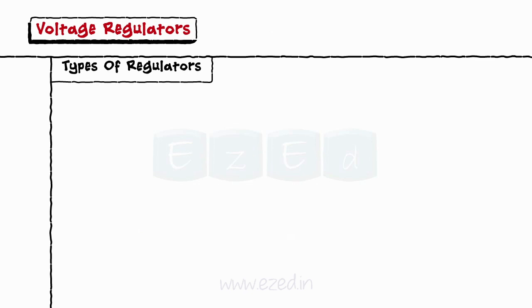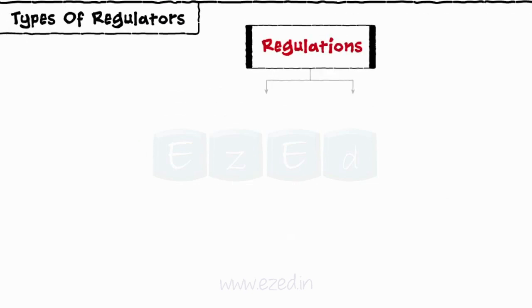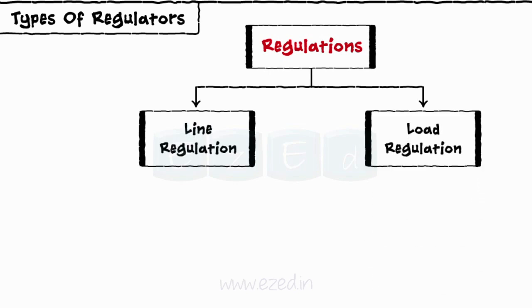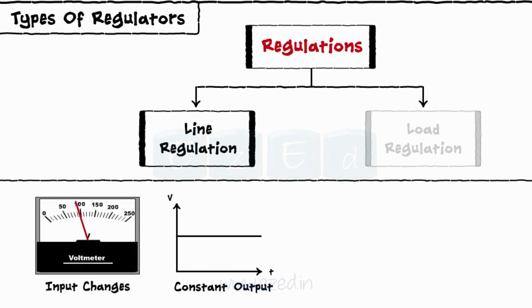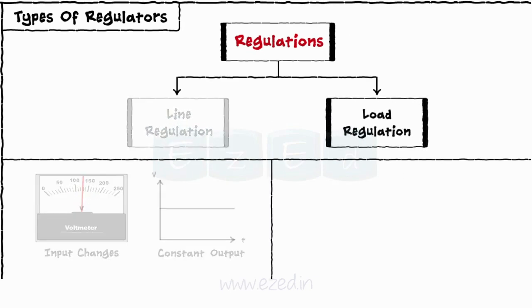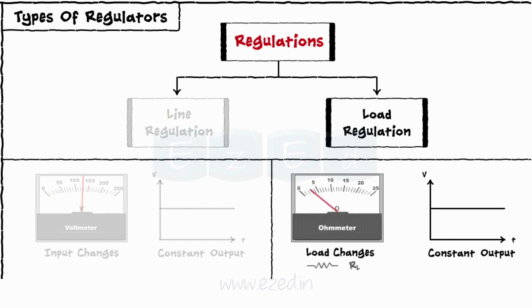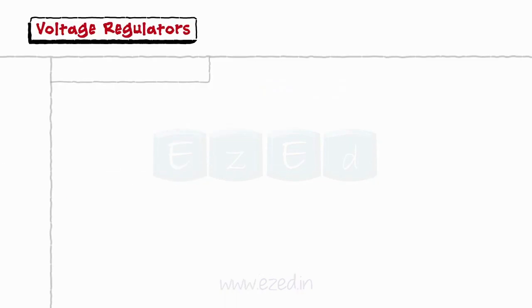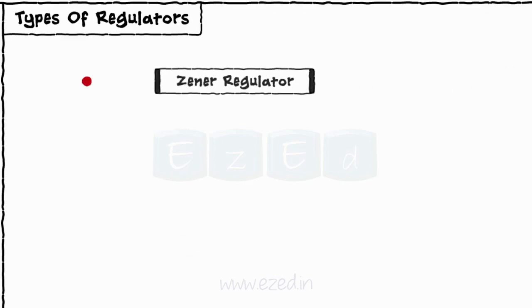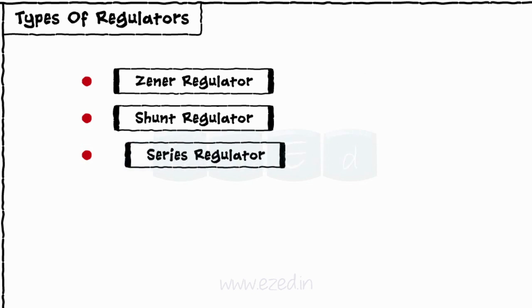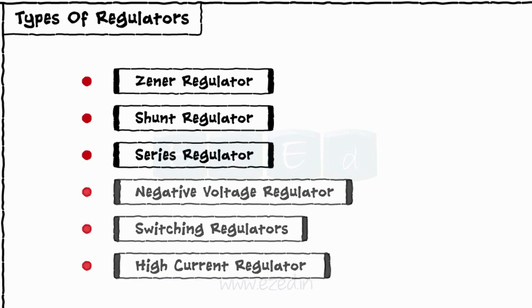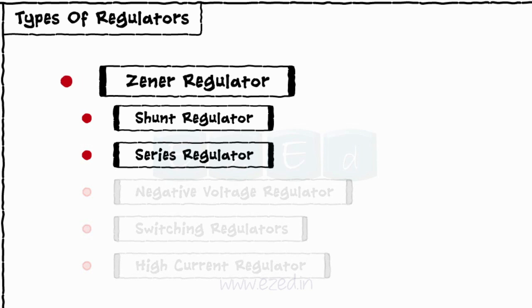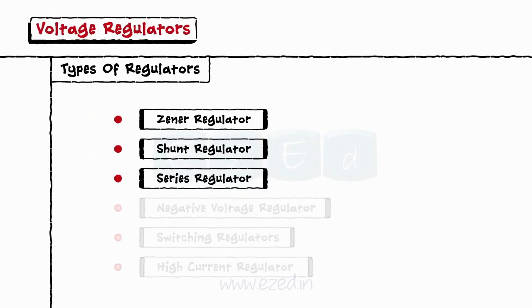Let's see the types of regulators. The regulations are of two types: line regulation and load regulation. In line regulation, the output voltage remains constant irrespective of the change in the line voltage or input voltage. In load regulation, the output remains unchanged even if the load changes. The different types of regulators are Zener regulator, shunt regulator, series regulator, negative voltage regulator, switching regulator, and high current regulator. We will only focus on three: Zener regulator, series regulator, and shunt regulator.